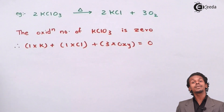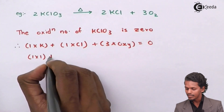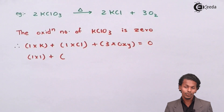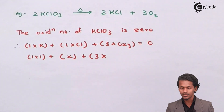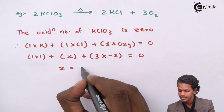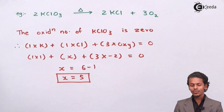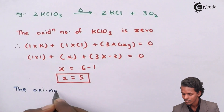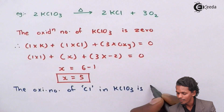The oxidation number of potassium is +1, so I write: 1×(+1) + X + 3×(−2) = 0. Solving: 1 + X − 6 = 0, so X = 6 − 1 = 5. Therefore, the oxidation number of the chlorine atom in KClO₃ is +5.